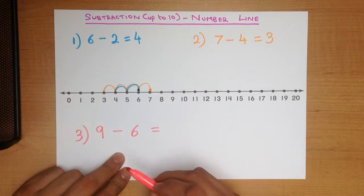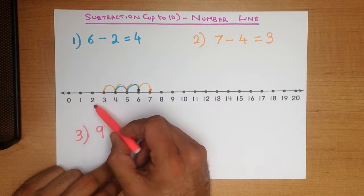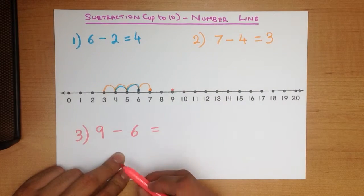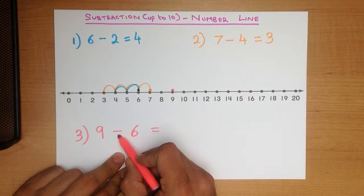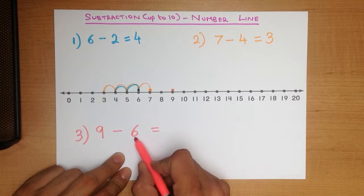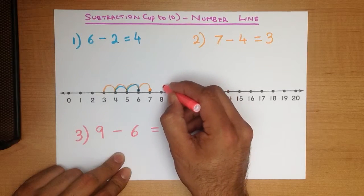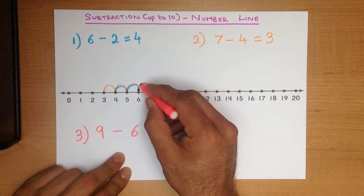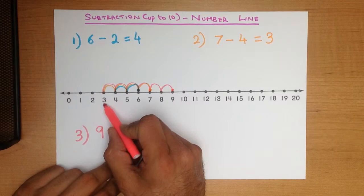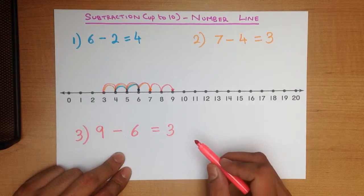Let's change colors again for one more example — what is 9 minus 6? Remember, the same principle applies. What's the first number? It's 9. So let's look up 9 on our number line, here it is. Let's put a little dot. We are minusing, subtracting, so we are going backwards. How many jumps? 6 jumps back: 1, 2, 3, 4, 5, 6. What number do we land on? It is 3. 9 minus 6 equals 3.